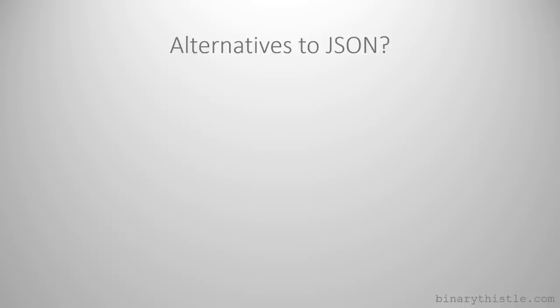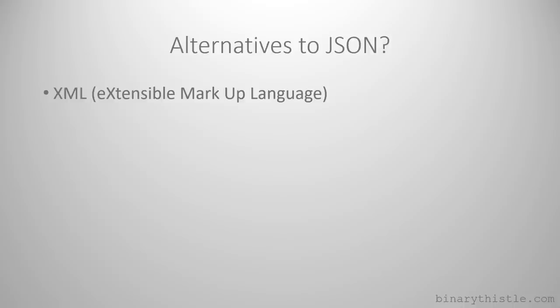Just to wrap up before we go into the coding - what are our alternatives to JSON? XML - Extensible Markup Language - I'm sure you've heard of that. That was probably around before JSON and was going to solve world hunger, but never quite transpired that way. I feel that JSON has possibly overtaken it now, especially with the real uptake of RESTful APIs - they tend to use JSON as their data transmission protocol.